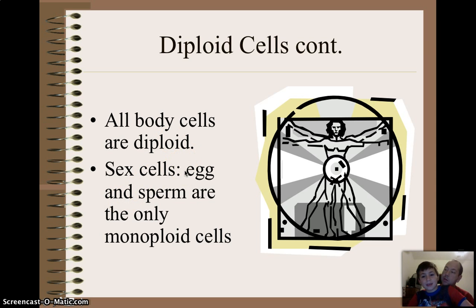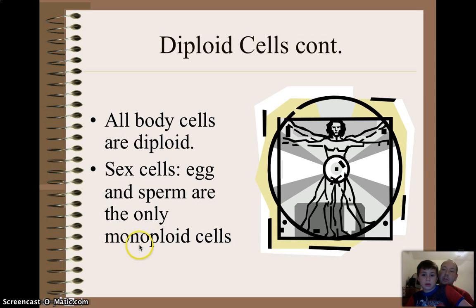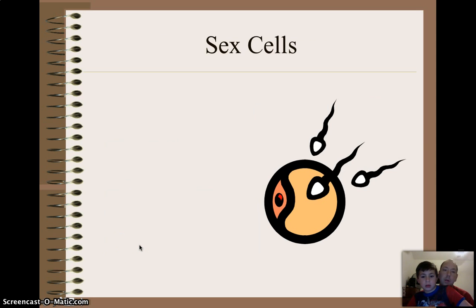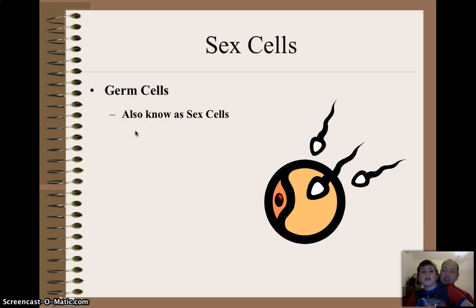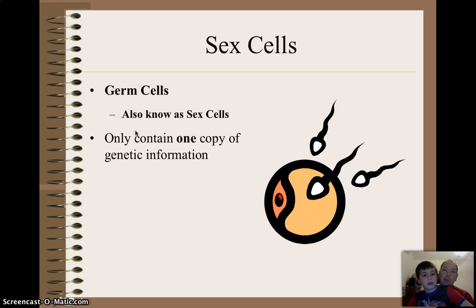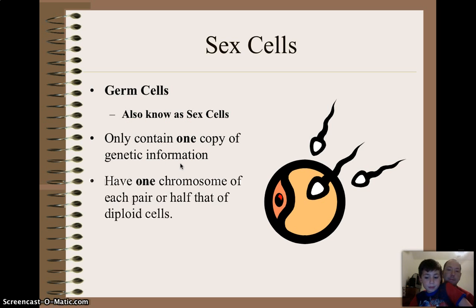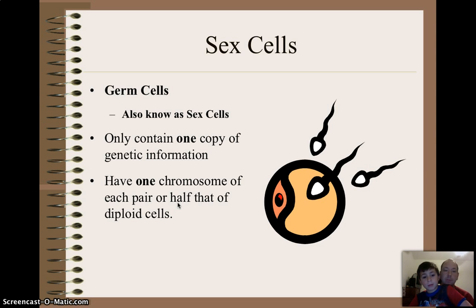Remember which one you have? Boys have sperm, girls have eggs. Those are the only monoploid, or sometimes we call this term haploid. Another name for sex cells is germ cells. And remember, these cells only contain one copy of genetic information. Basically what it means is that they have half the number of chromosomes that are normally found in a body cell.